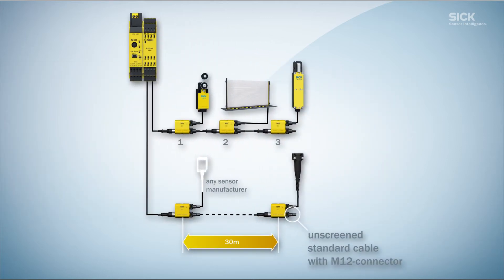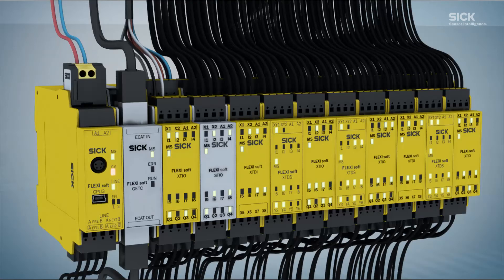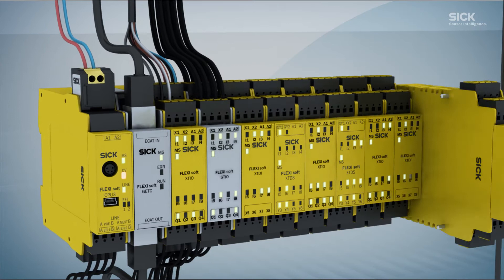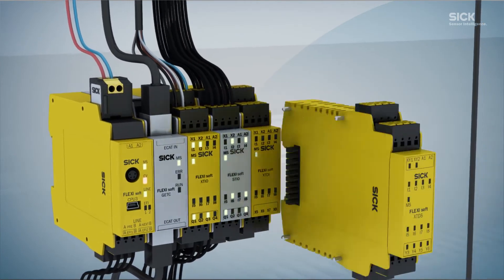The Flexi-Loop makes it possible to cascade up to 32 safety sensors, guarantees the highest level of safety, reduces the overall amount of cabling and therefore frees up valuable inputs in the control cabinet.